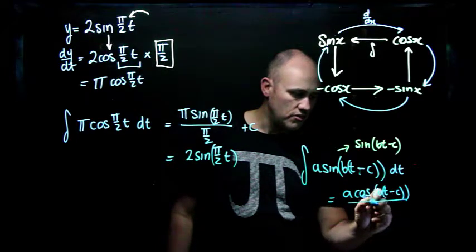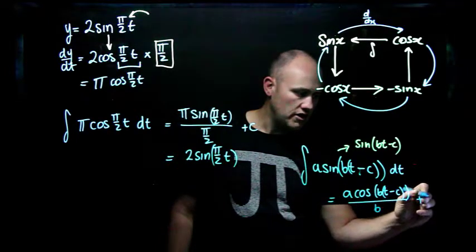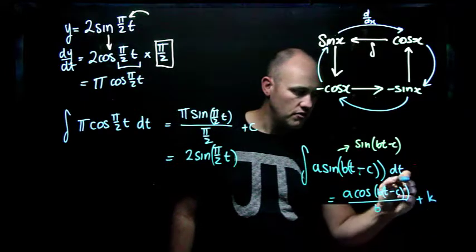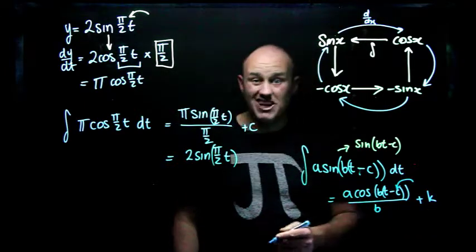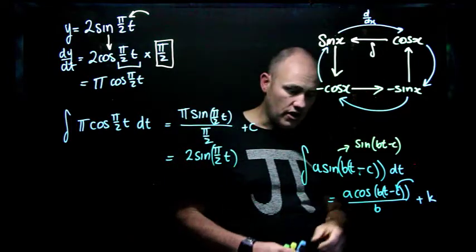But we have to divide by the derivative of the inside, which in this case is b, and we add a constant, which I'm going to call k this time, because I've already used c. I've got to be careful not to double use my unknowns.